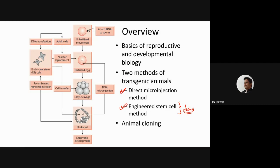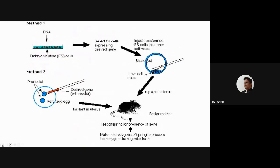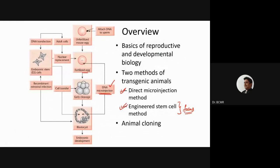DNA microinjection is one technique: you take a fertilized egg, put in the gene construct, and let it grow into a blastocyst and through embryonic development. That method is more simple and straightforward but is not as much in control — we cannot control it as much.